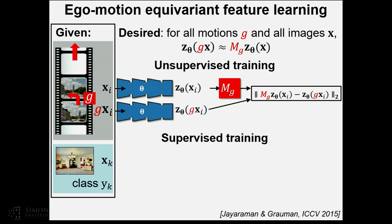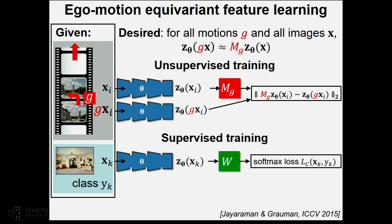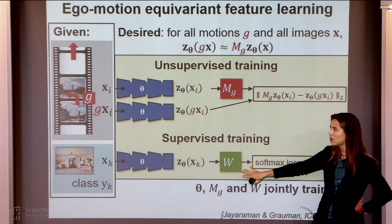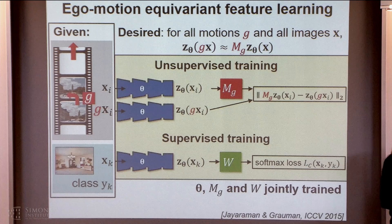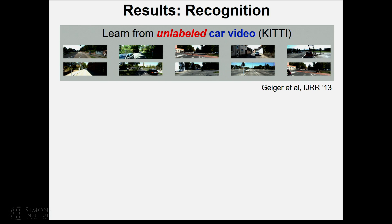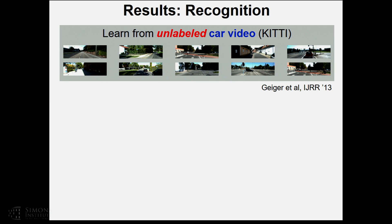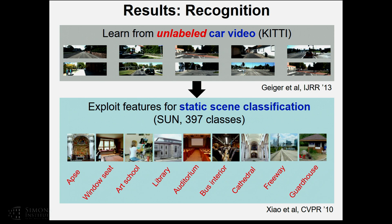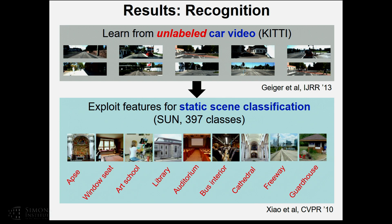This allows us to get back a learned representation that's ego-motion sensitive. We've played with it in different ways, including jointly training recognition models by learning parameters not just for the mapping but also some classifiers at the same time. Or in the results I'll show next, we can do this purely with unsupervised learning and then do simple classification in the learned space. We took unlabeled video from the KITTI dataset — video captured on a vehicle driving around different locations in a city. The recognition task is scene classification, a challenge with about 400 different scene categories.